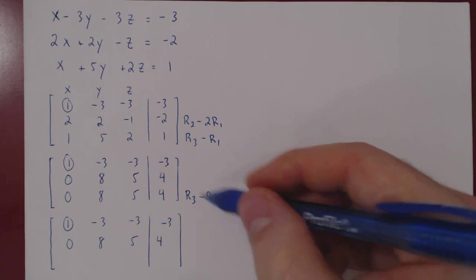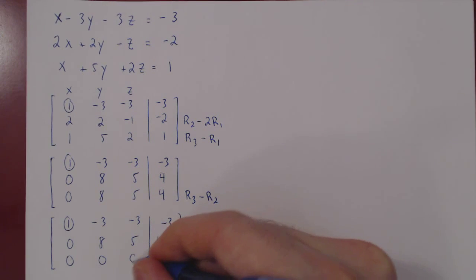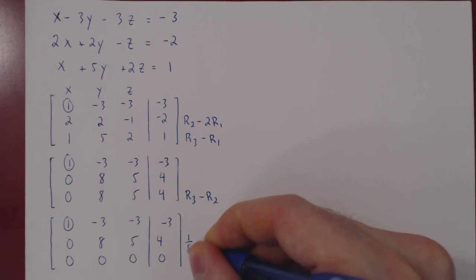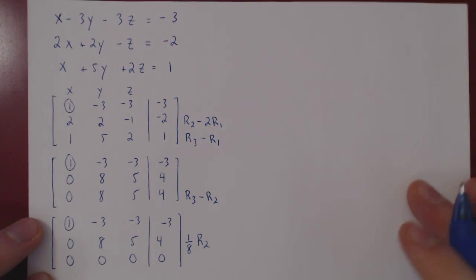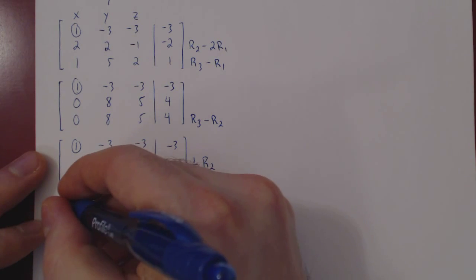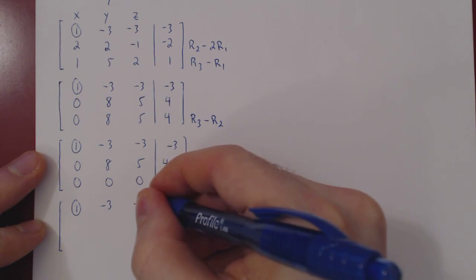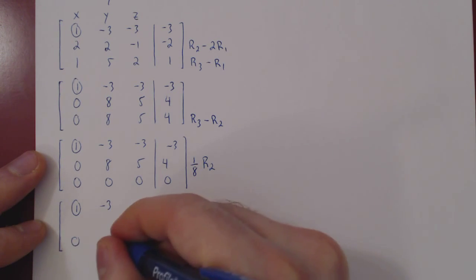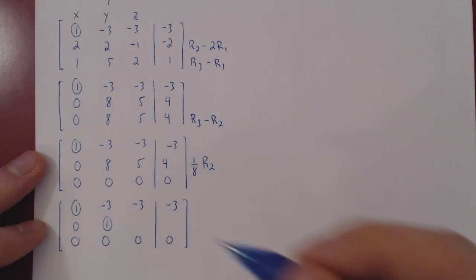And, of course, if we do row 3 minus row 2, as they are the same rows, we will get a row of zeros, which is okay. It's just a vacuous row. All it says is 0 is equal to 0, which is always true. And now we get our second leading one by multiplying row 2 by 1 over 8. And we'll get 0, 1, our second leading one.